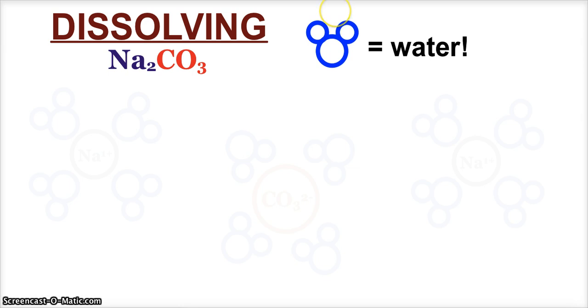So, we end up having a partial positive, this is supposed to be the lowercase delta symbol. So, we have a partial positive side of the water molecule where the hydrogens are, and we end up having a partial negative side of the molecule where the oxygens are. And that's extremely important when talking about dissolving things in water.